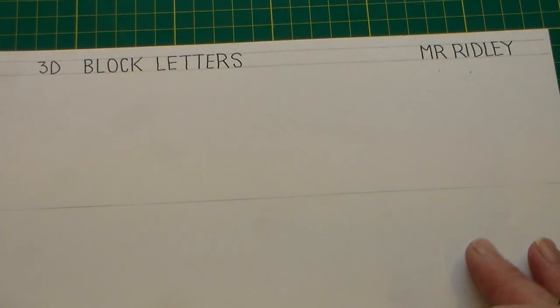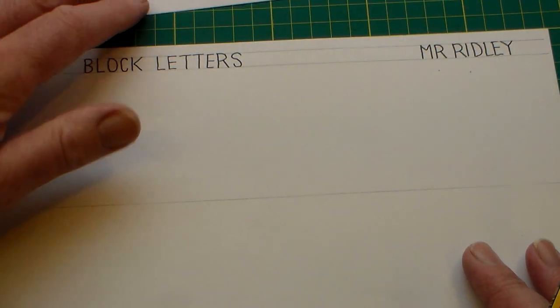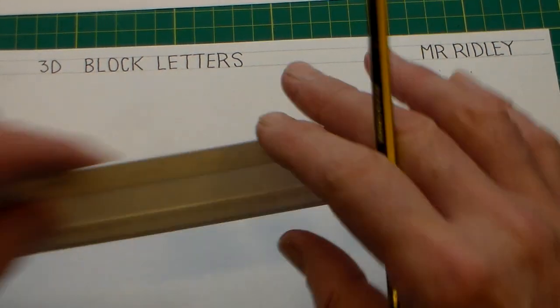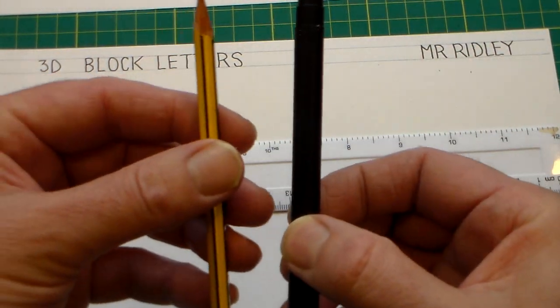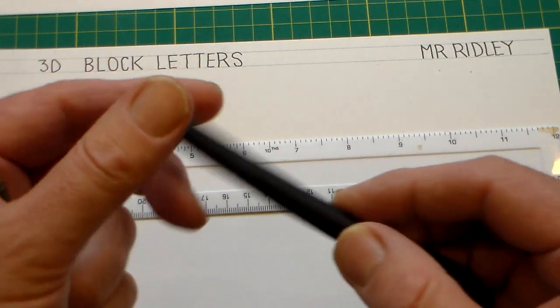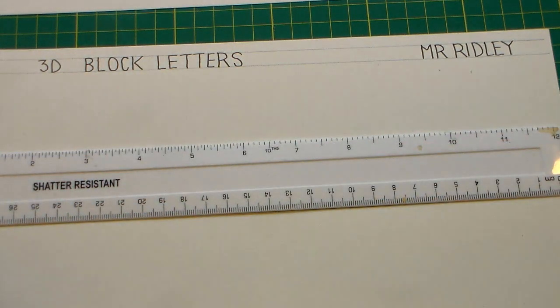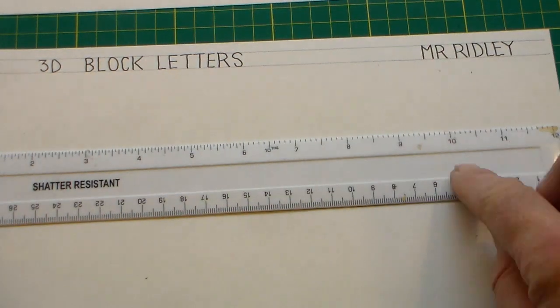Then once we've done that, we're going to draw a line using a pencil. The equipment I'm going to be using here is a pencil. I've just got an HP pencil, a fine liner, a rubber, and a ruler.